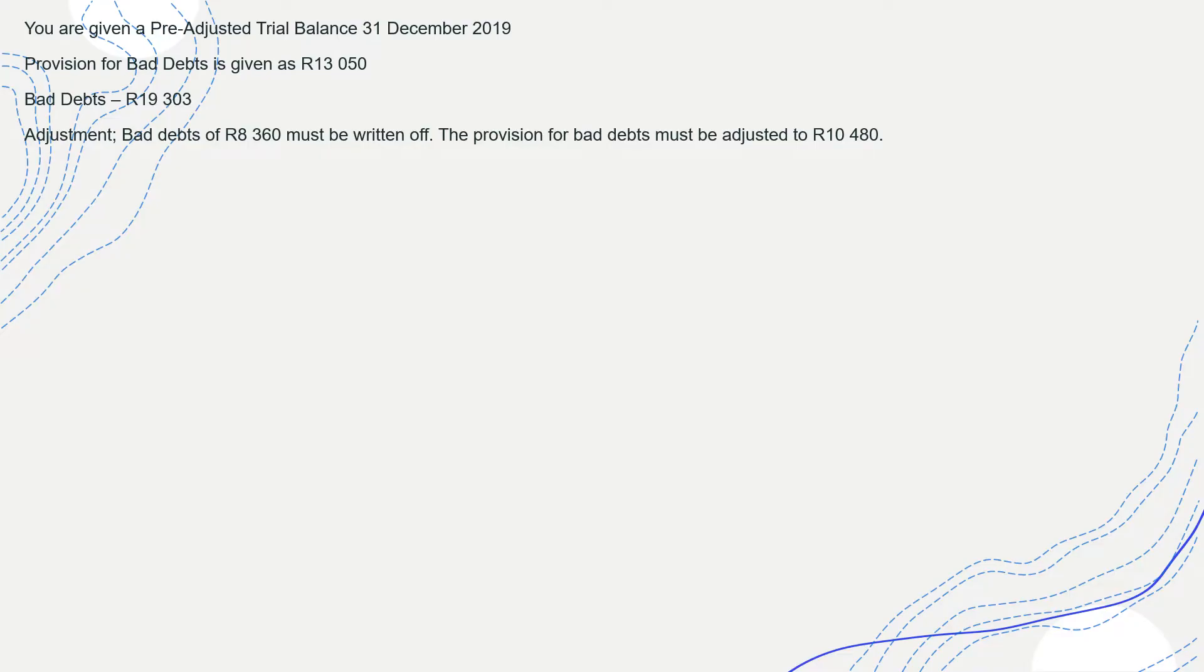Now that we have a pre-adjustment trial balance on the 31st December 2019, provision for bad debts is given as R13,350. That means the previous bad debts given is R19,303. The difference between the two is that provision for bad debts is just an estimation, an assumption that a certain amount of debtors would default or will be written off, but the bad debts are the actual expense now whereby it's been confirmed that a particular debtor has not paid, so that could be an expense.